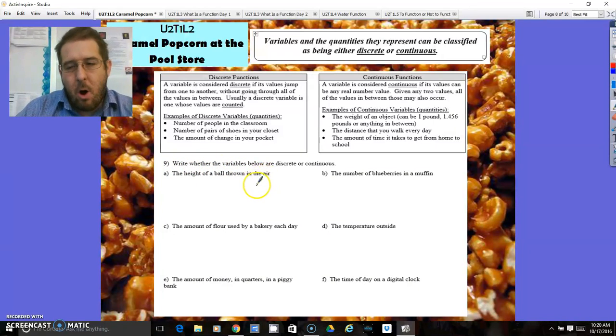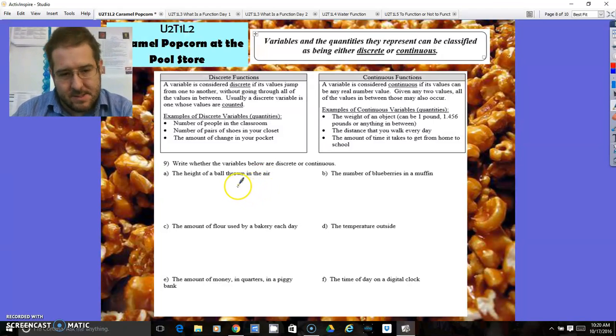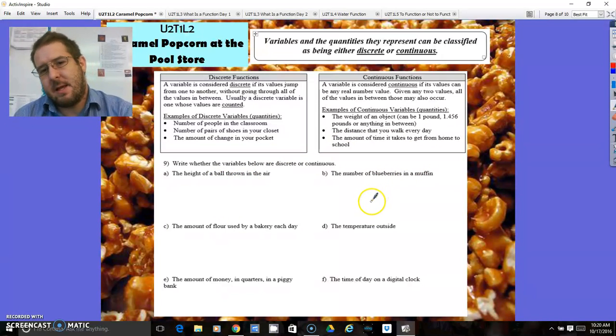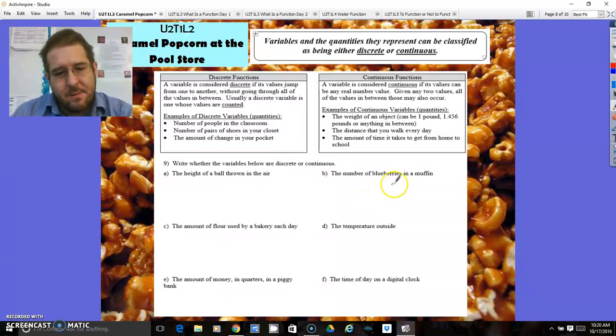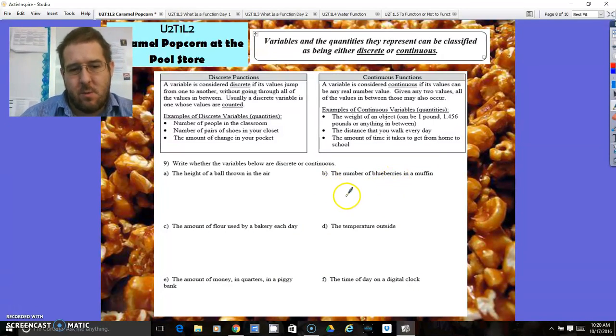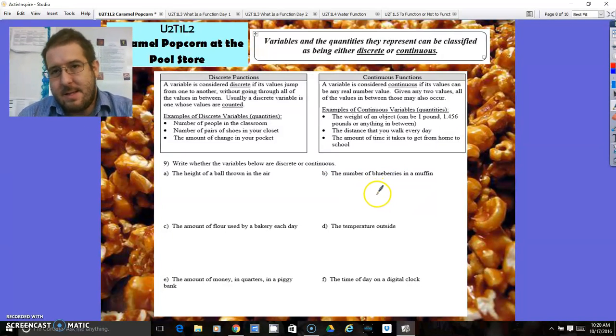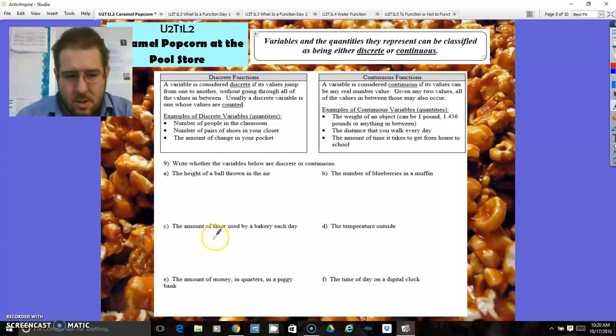So then we have these scenarios where you're trying to figure out is it discrete or continuous. The height of a ball thrown into the air. A ball always has a height. No matter if it's been a half a second or three quarters of a second, it always has a height. So that is a continuous scenario. The muffins, this is kind of debatable. Depends if you think they're going to cut up the blueberries or not, whether you can have a half a blueberry in a muffin. I tend to think you can have half a blueberry in a muffin. So 10 and a half blueberries in one muffin is possible. Then you think the answer is continuous. If you think that's not possible, then you would think that this is discrete.